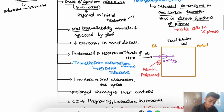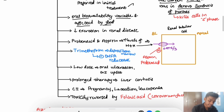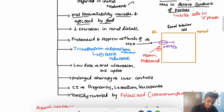Oral bioavailability of methotrexate is variable and is affected by food. Its excretion is decreased in renal disease. Regarding drug interactions, when given along with probenecid or aspirin, its levels are increased.